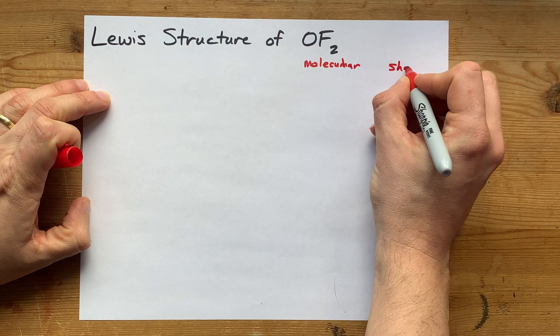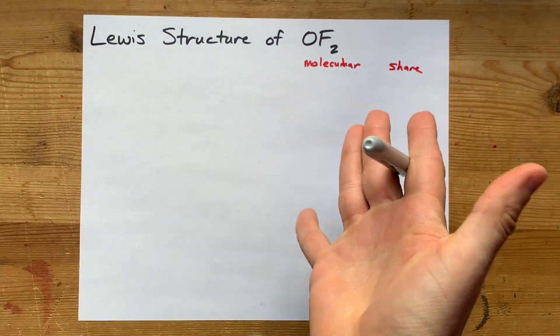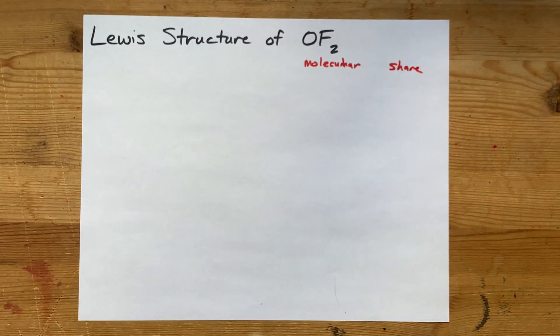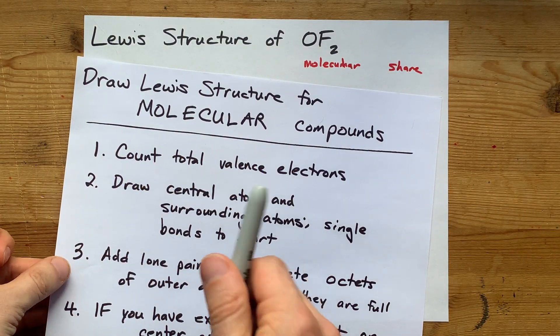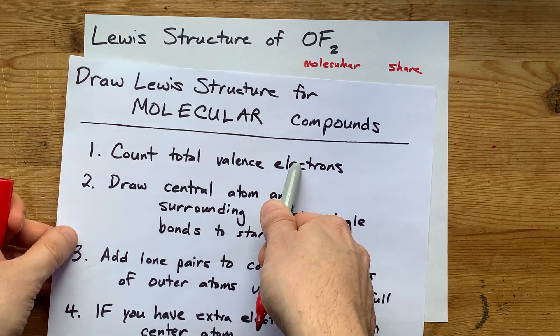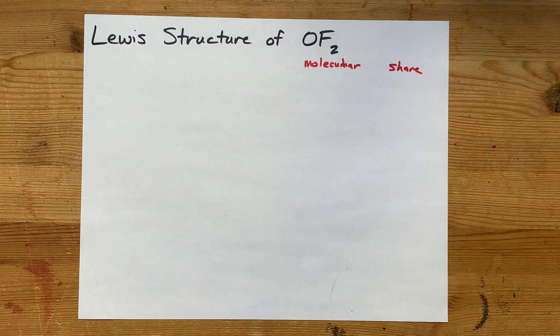That means they're going to share electrons. It is not an ionic compound where there's a transfer of electrons. To draw the Lewis structure for molecular compounds, first I count the total number of valence electrons that the atoms bring.